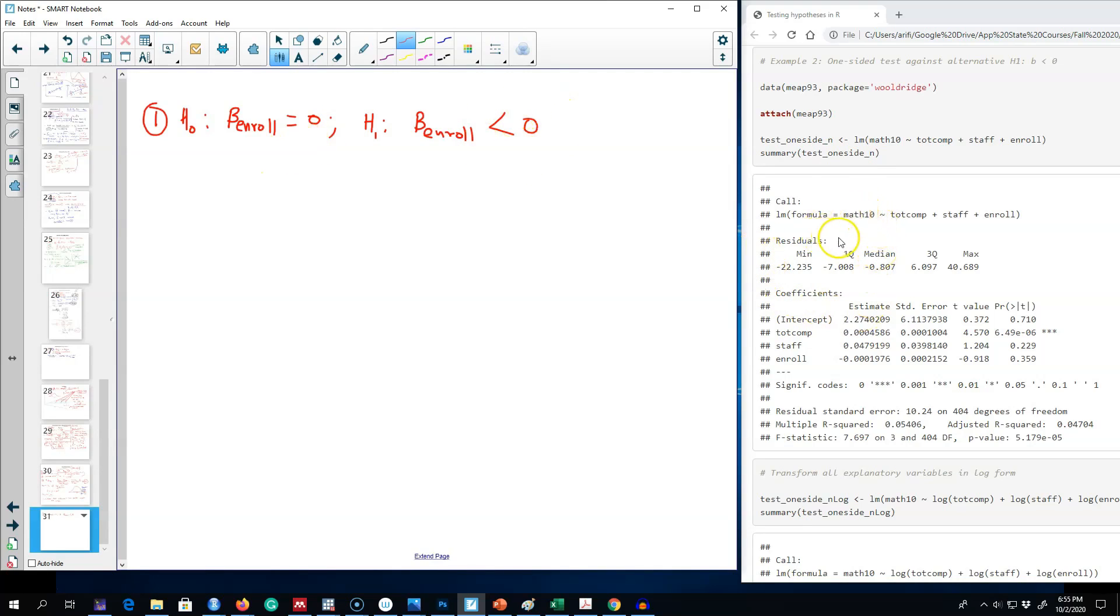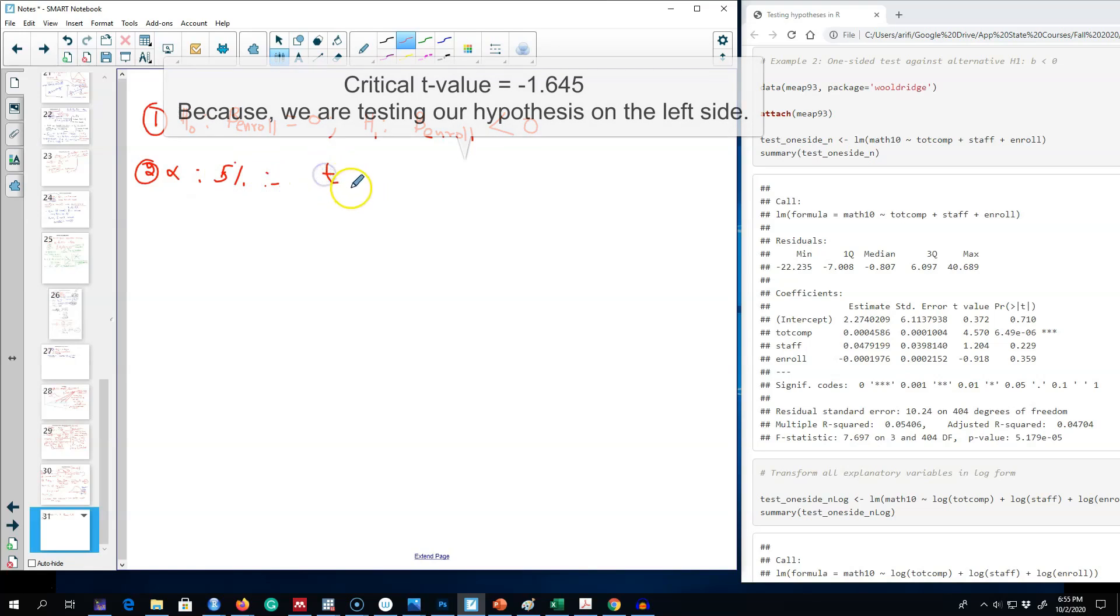Our step 2 is to choose alpha. Based on the same logic that I talked about previously, we're going to use alpha 5%, and based on this our t value is 1.645, as it was in the previous case. That was our step number three.